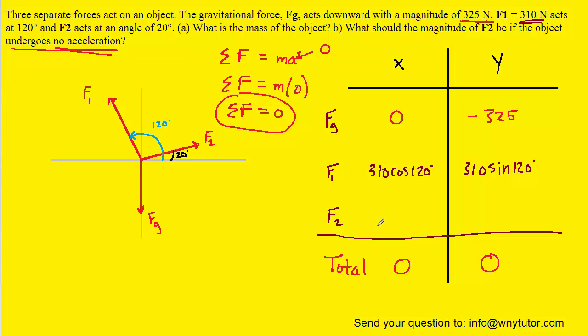Now F2, we do not know its magnitude, and so for the x component, we can say F2 times the cosine of its angle, which was 20 degrees, and then for the y component of F2 we'll have F2 times the sine of 20 degrees.